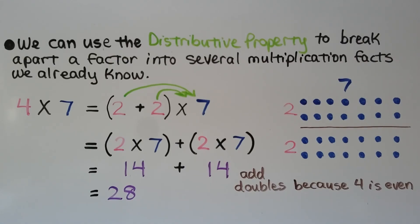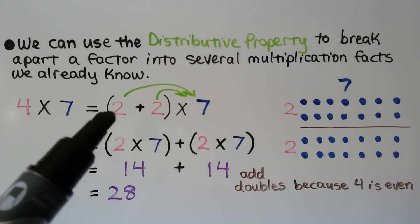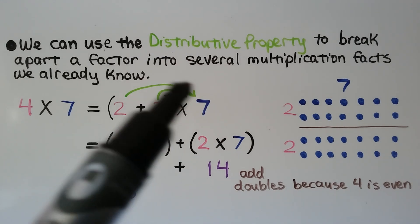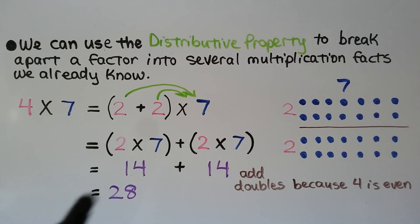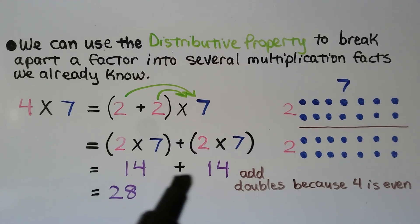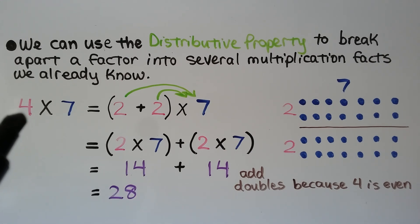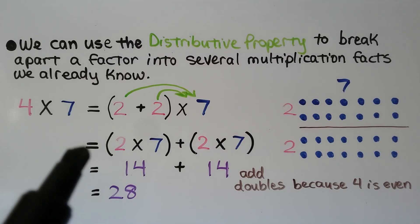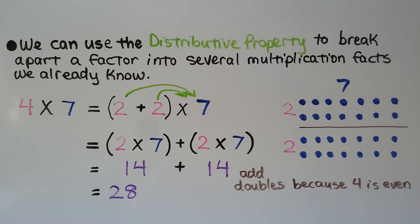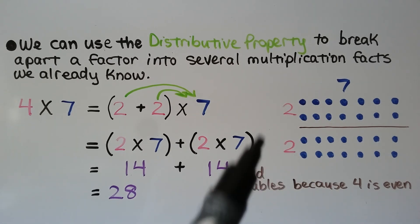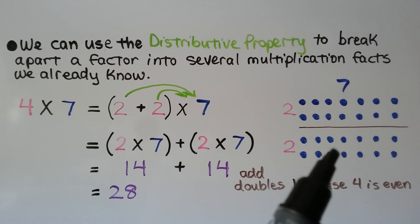We can use the distributive property to break apart a factor into several multiplication facts we already know. 4 times 7 can be broken into (2 plus 2) times 7. We would do 2 times 7 plus 2 times 7. 2 times 7 is equal to 14, plus 2 times 7 which is also equal to 14. We add doubles because this 4 is even — we break it into 2 plus 2. 14 plus 14 is equal to 28. For our array, instead of having 4 rows of 7, we have 2 rows of 7 plus 2 rows of 7.